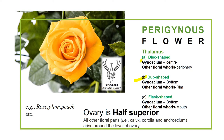Next is the perigynous flower. In perigynous flowers, the thalamus may be disc-shaped, cup-shaped, or flask-shaped. In the disc shape, the gynoecium is present in the center and the other floral parts are present at the periphery of the disc. In the cup shape, the gynoecium is present at the bottom of the cup and the other floral parts are present on the rim.